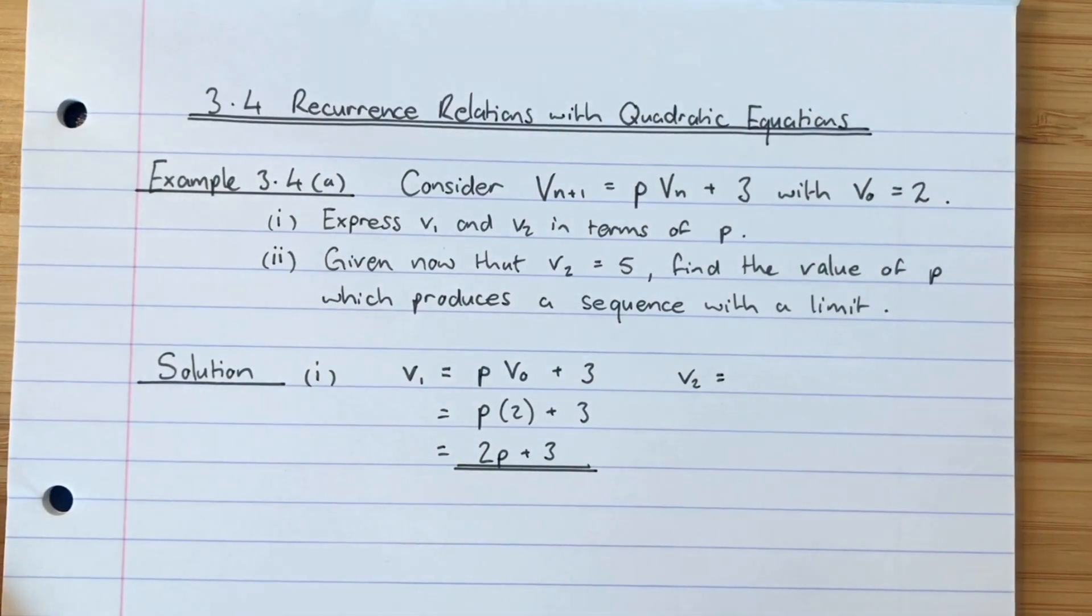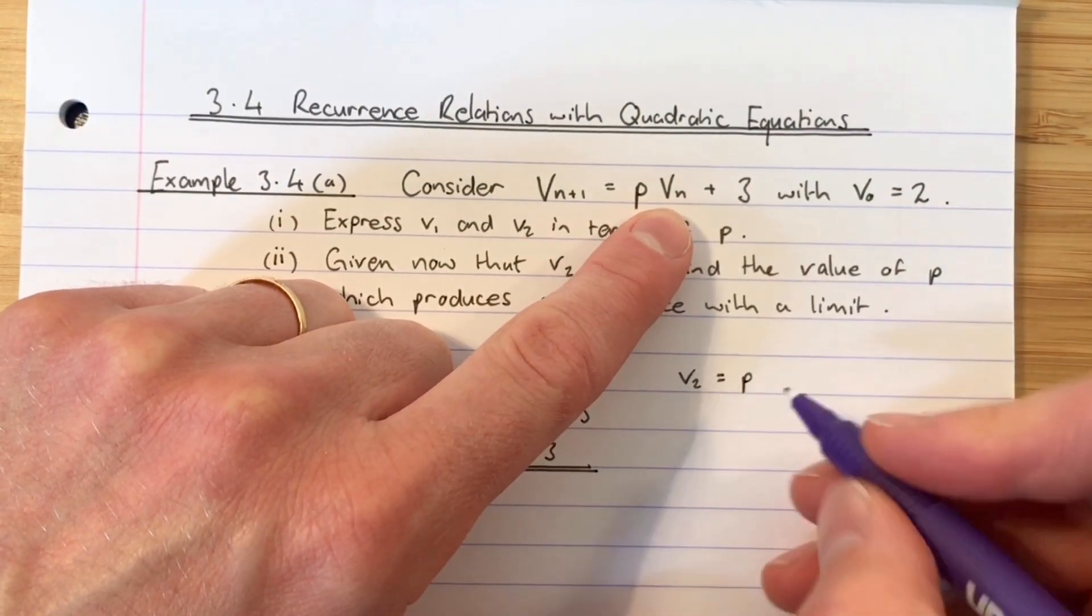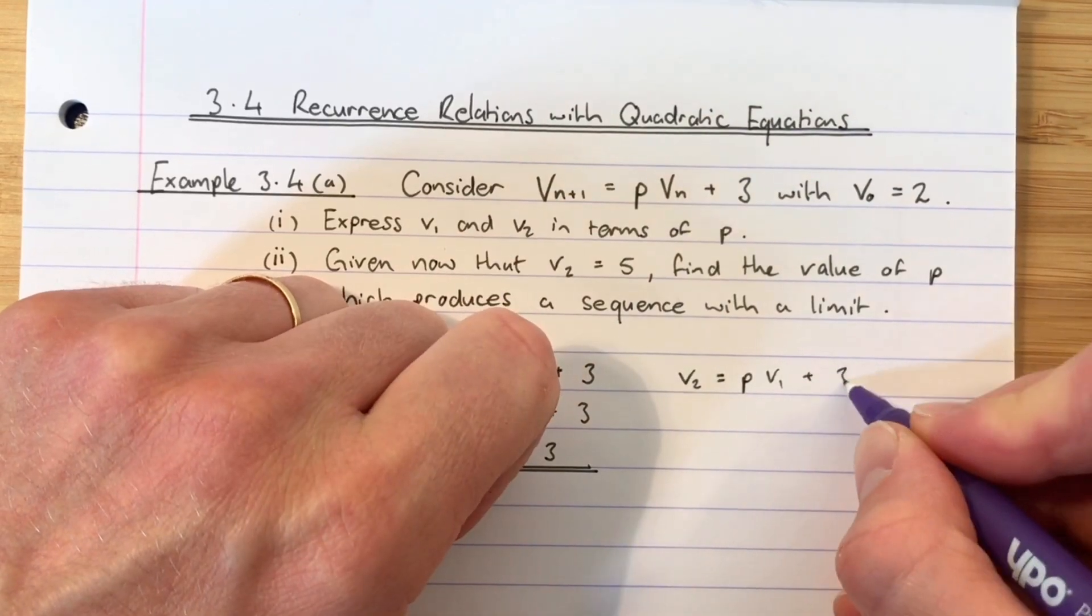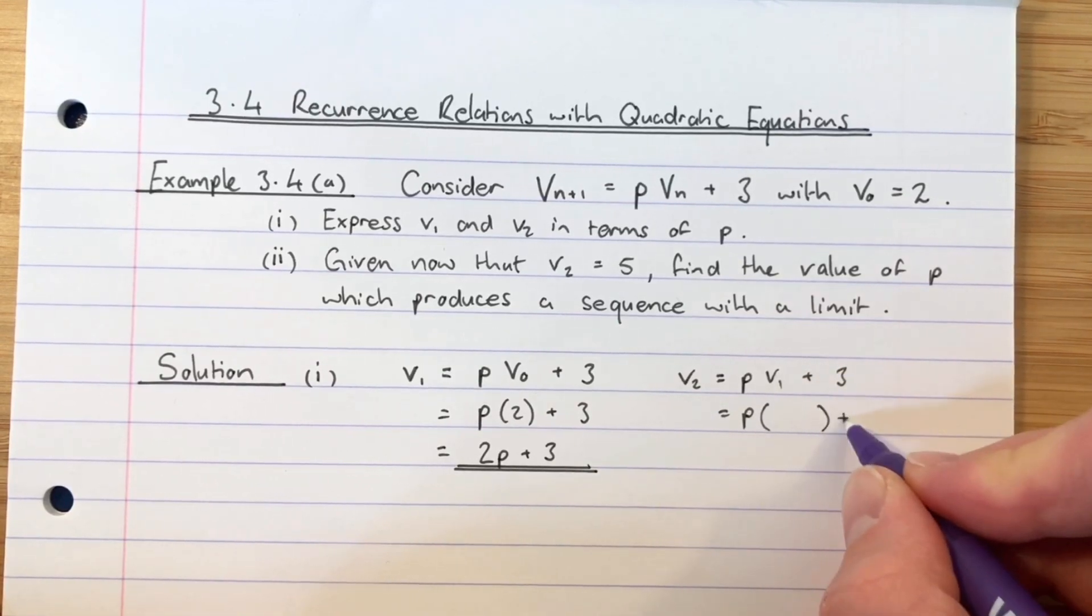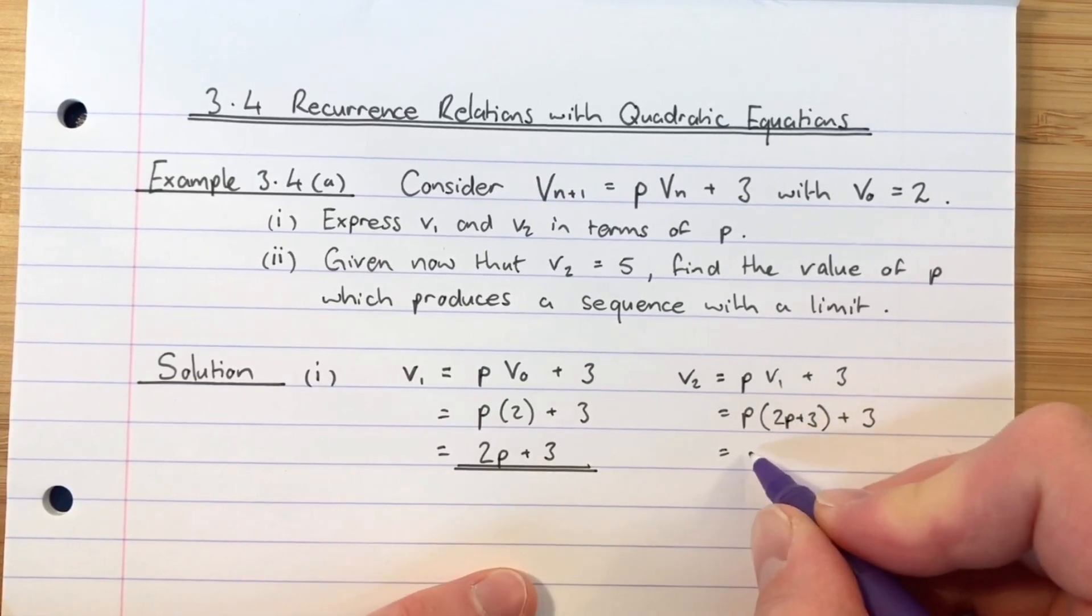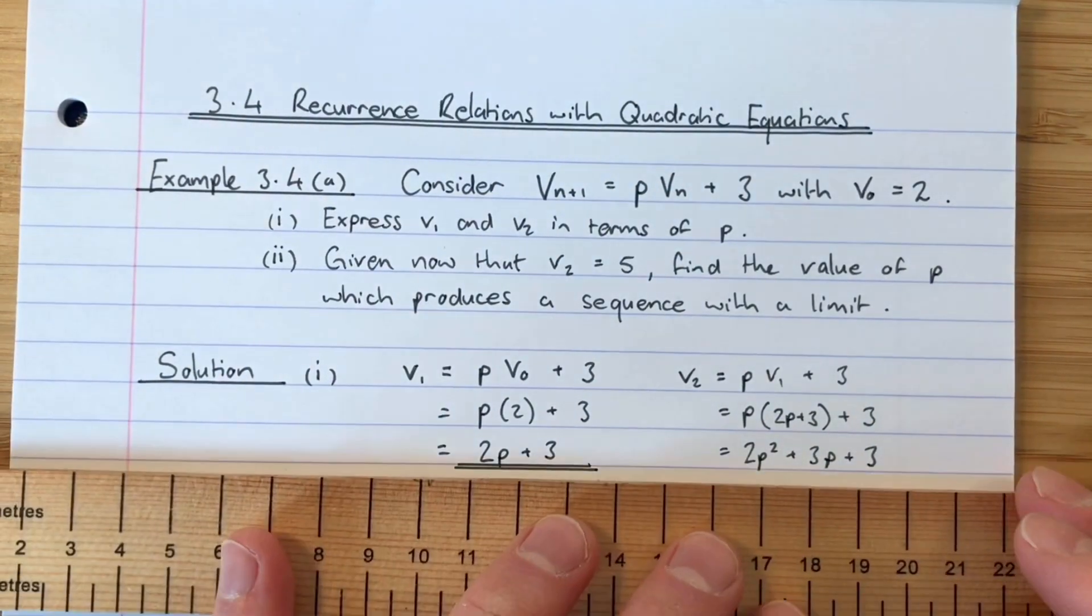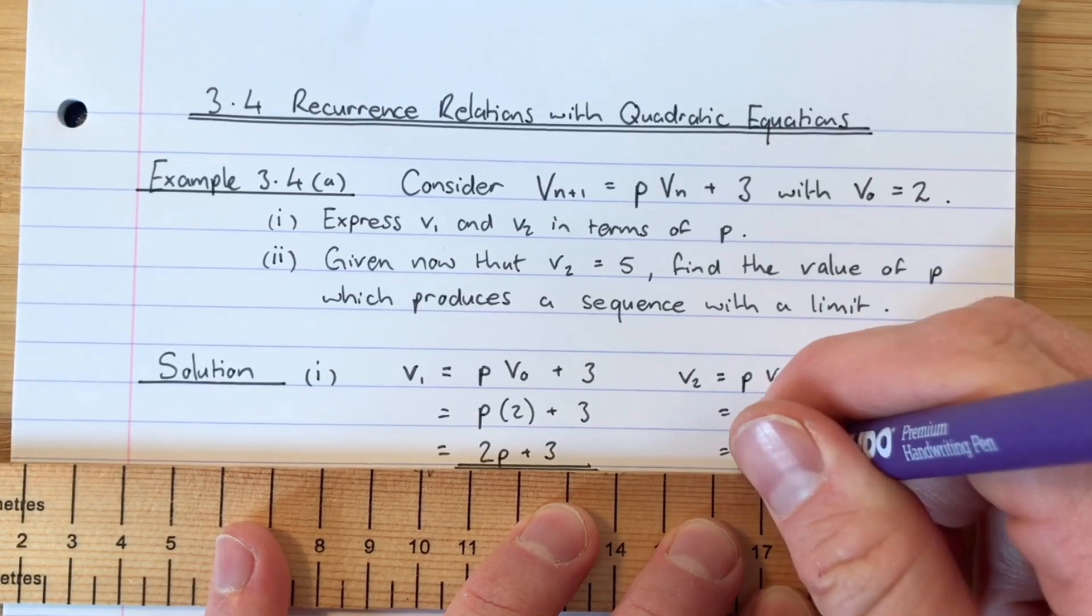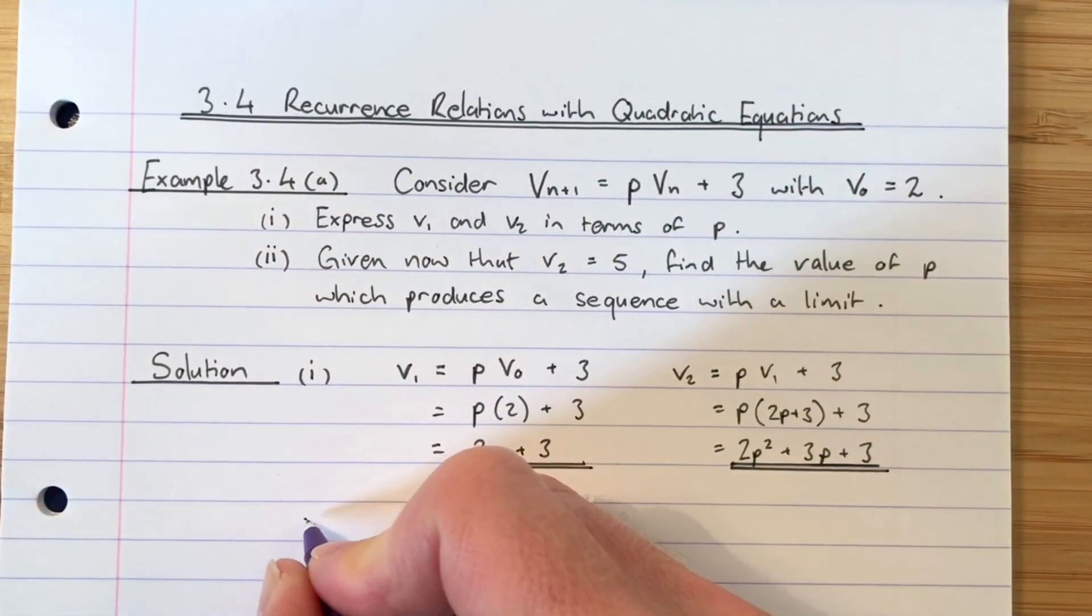It's as simple as that. When this comes up in your exam every single person in Scotland will get that bit right but it also wants an expression for v_2. And there's a silly thing that sometimes happens here people forget to go back to the original equation. So the original equation is p times the previous term, so the previous term to v_2 is v_1 add three, so that's p multiplied by whatever v_1 was add three. Well v_1 was 2p add 3. Multiplying out that bracket we get 2p squared add 3p add three and that is my expression for v_2 in terms of p.